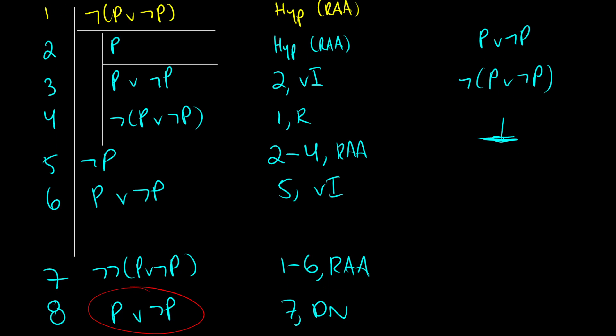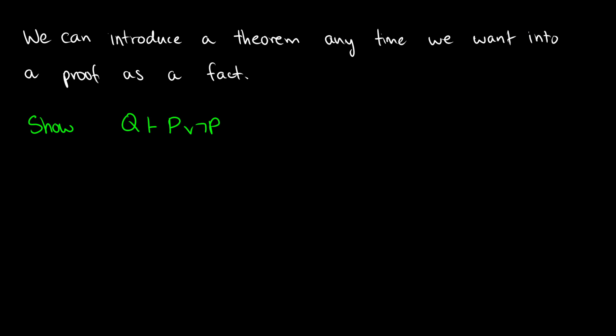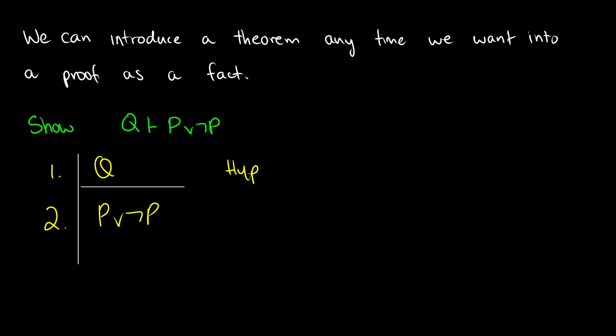Those are four theorems we can now use at any time — and there are many more. The key reason we do this is that we can introduce a theorem anytime we want as a proven fact. For example, to show Q ⊢ P∨¬P: we're given Q as a hypothesis, and rather than reproving P∨¬P from scratch, in line 2 we simply introduce it as a theorem — specifically the Law of the Excluded Middle (LEM). That's the end of the proof, much shorter. If you have any questions, ask them in the comments below.